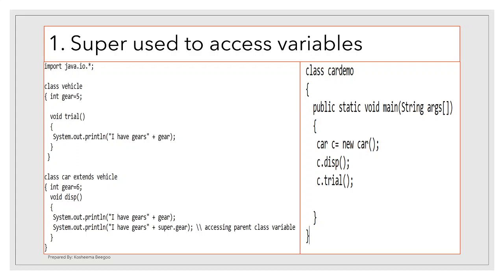The first use of 'super' is to access variables. Here, Vehicle is the superclass and Car is the derived class because of 'extends Vehicle'. Both have a variable called 'gear' — in Vehicle it is assigned 5, and in Car it is assigned 6. We create an object 'c' of class Car and call a method in the subclass.